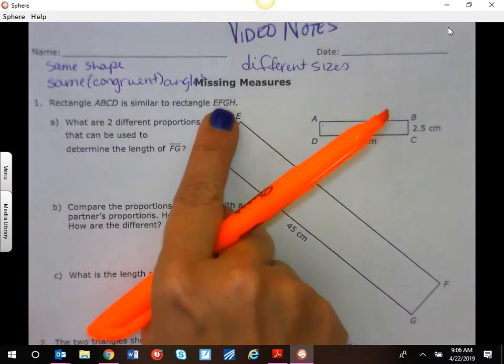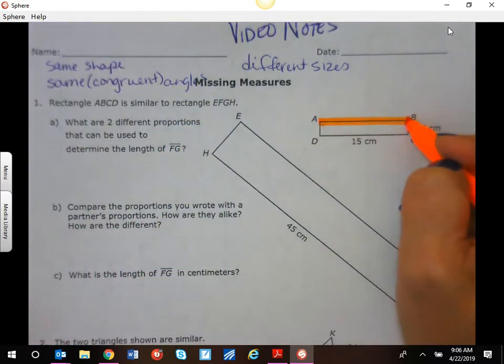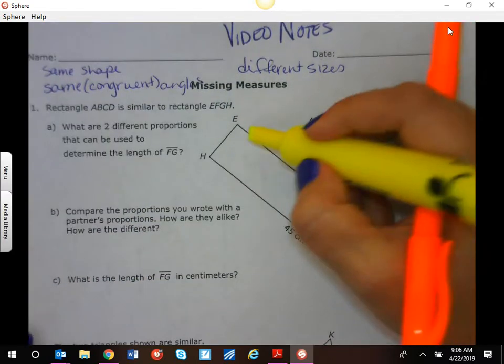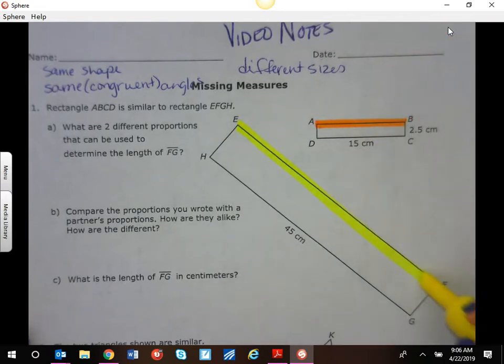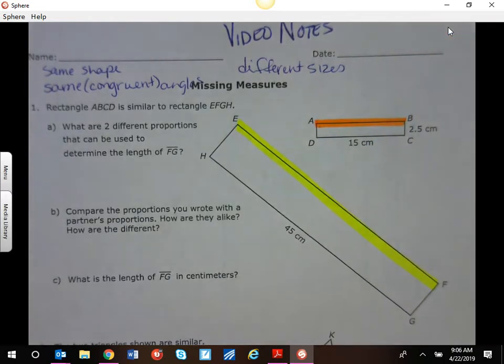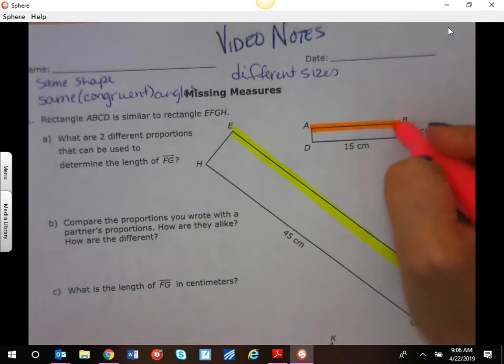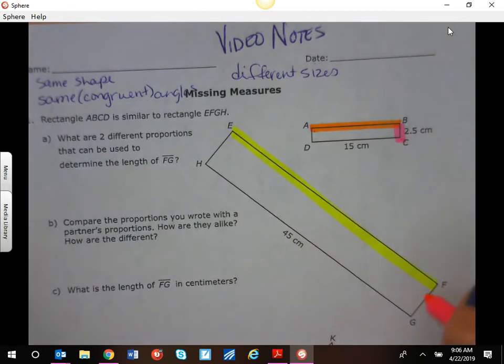AB is first, EF is first. So AB is the proportional side to EF and so on. We could say that BC and FG.